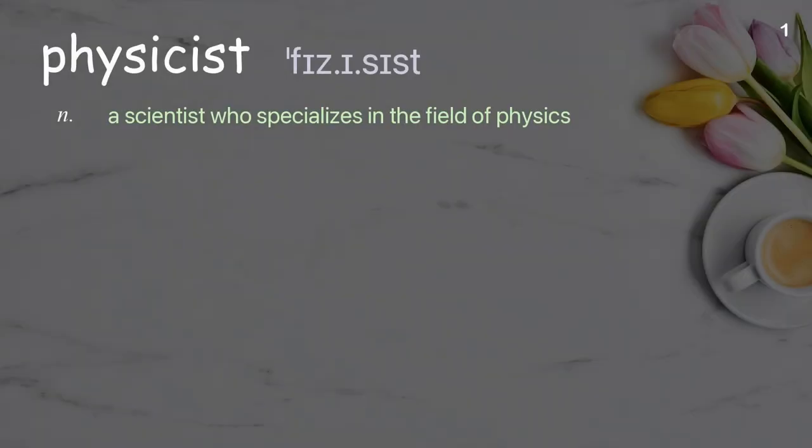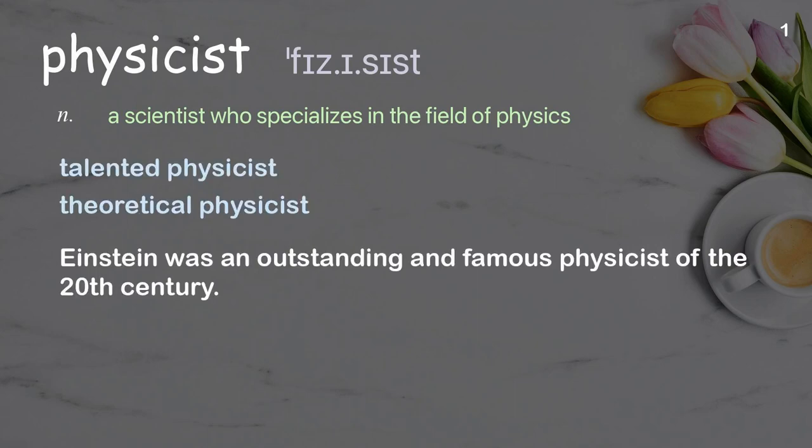Physicist. A scientist who specializes in the field of physics. Examples: talented physicist, theoretical physicist. Einstein was an outstanding and famous physicist of the 20th century.